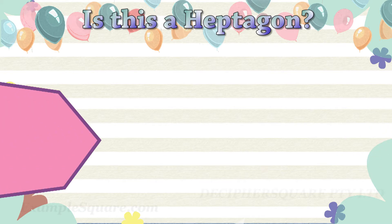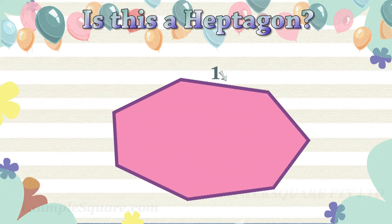Is this a heptagon shape? Yes, this is a heptagon shape. It has seven straight sides and seven corners.